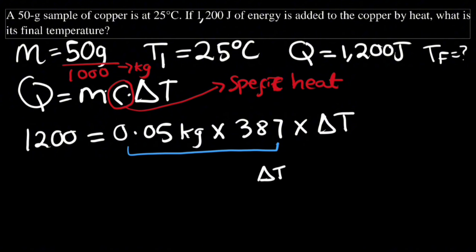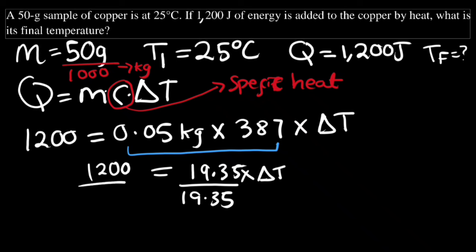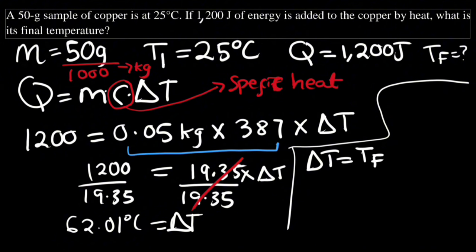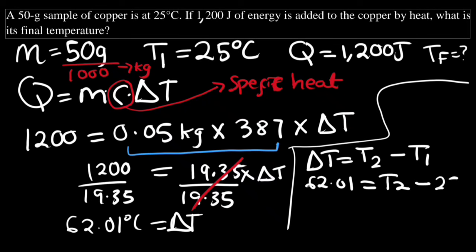We multiply 0.05 by 387 first to get 19.35, so ΔT × 19.35 = 1200 joules. Dividing both sides by 19.35 gives ΔT = 62.01 degrees. Now, since ΔT = T_final − T_initial, we have 62.01 = T2 − 25 degrees Celsius.